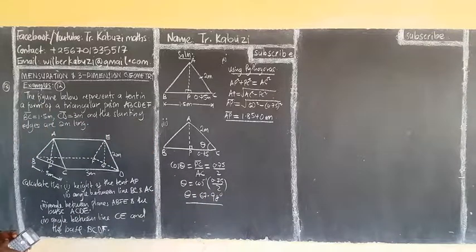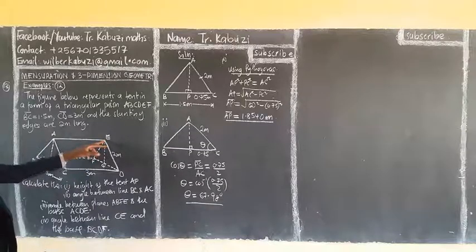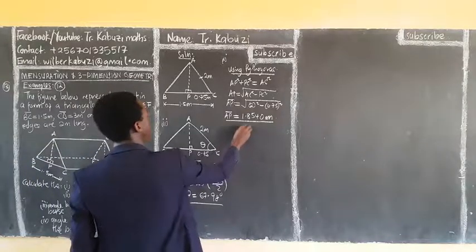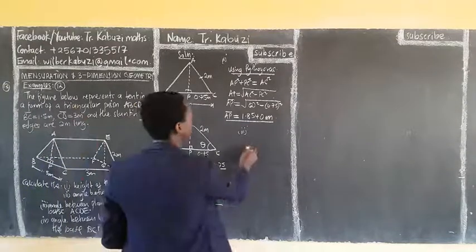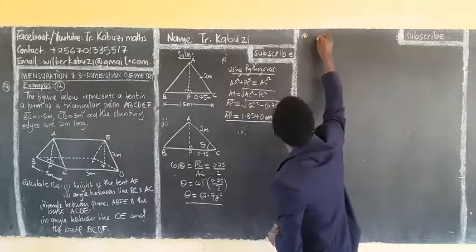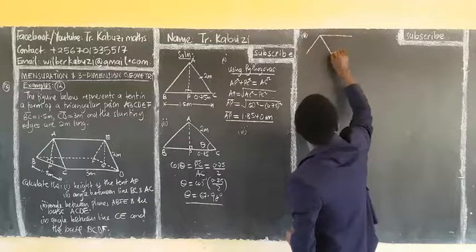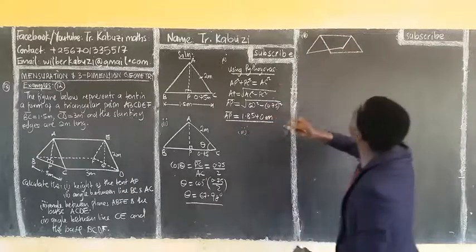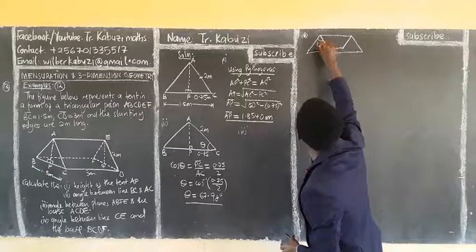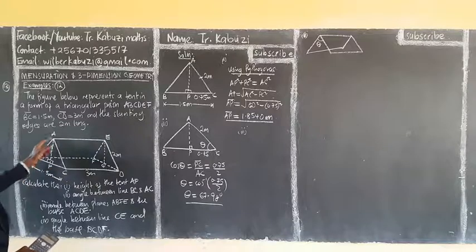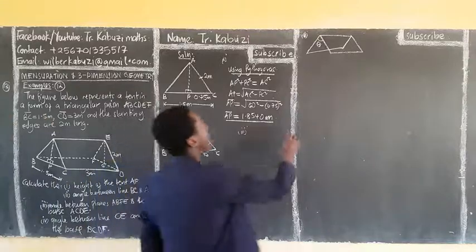Now for Roman numeral 3: the angle between planes ABFE and ACDE. If I try to bring out these planes here, when you look at them, these are the planes I have. We want to get the angle between them. So this angle here — the angle between planes ABFE and ACDE — I am going to use this diagram.